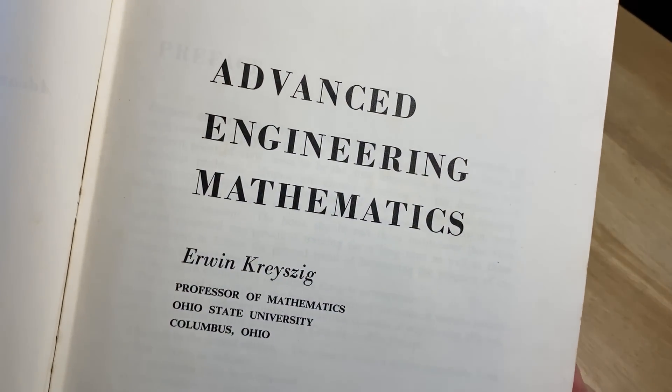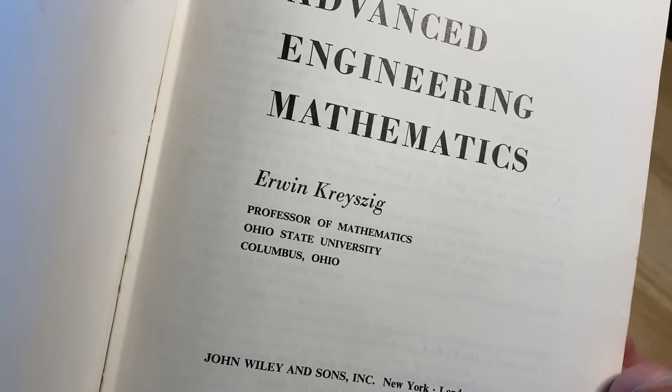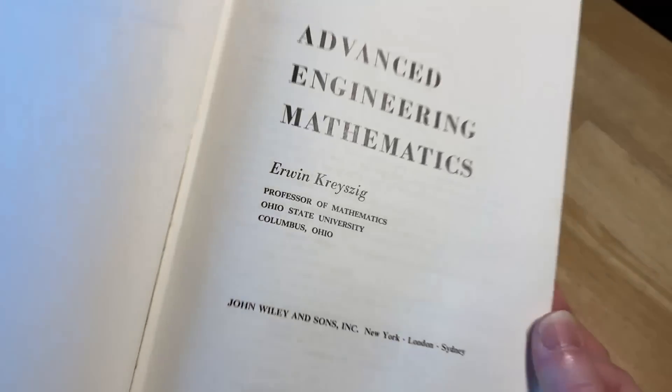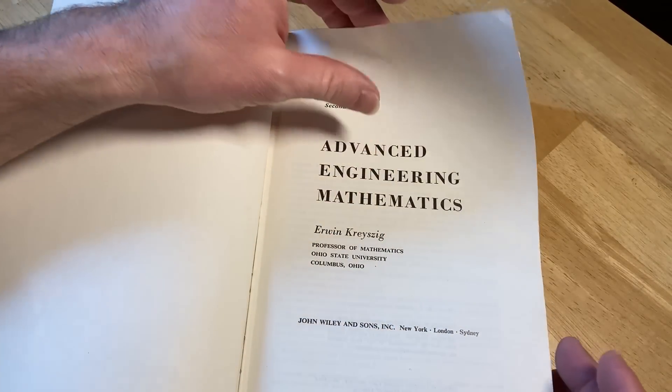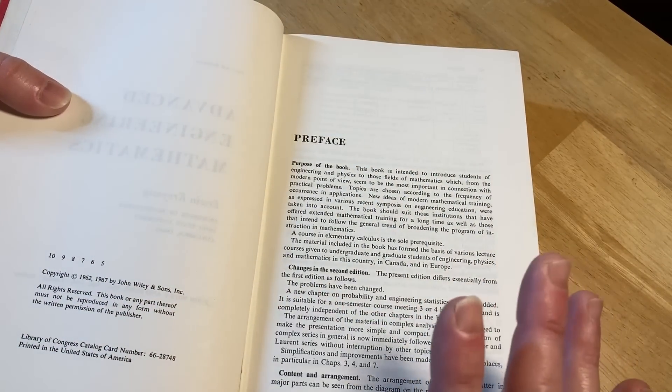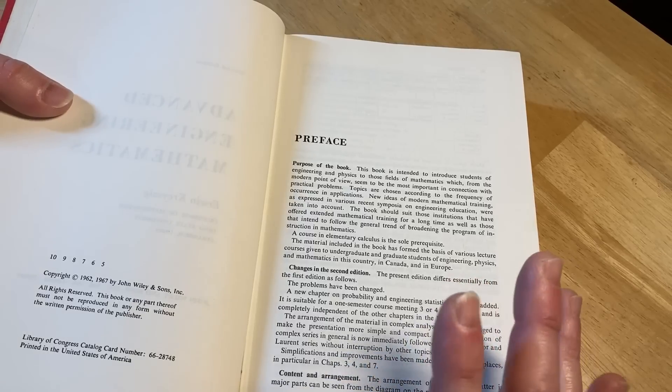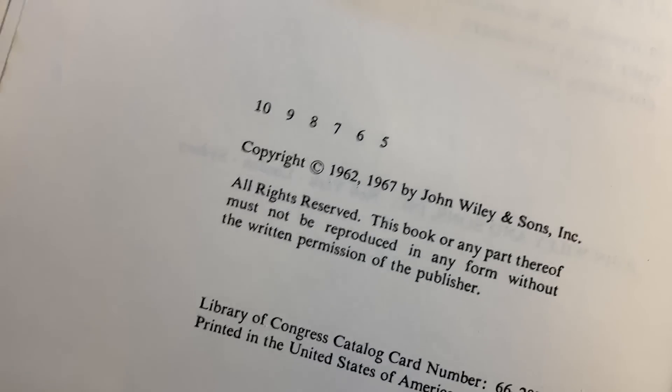You can see here it's the second edition, Advanced Engineering Mathematics by Erwin Kreysig, professor of mathematics at Ohio State University, Columbus, Ohio. This book is kind of expensive. I don't remember how much I paid, but it wasn't super cheap, which kind of makes sense. I think it's kind of in high demand because it's a popular book.